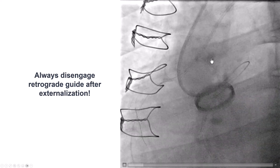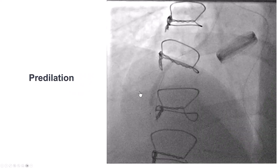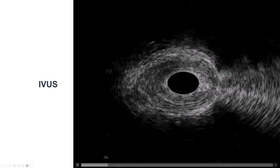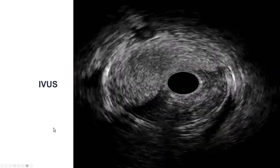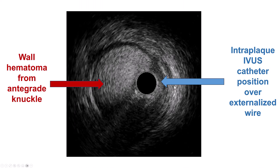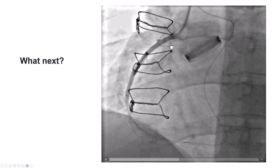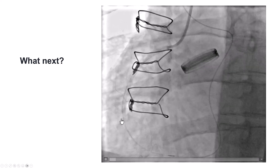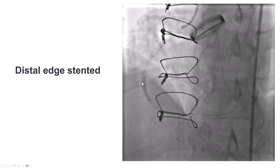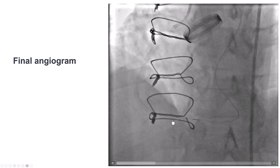After externalization, the first step is to disengage the donor guide so there is no potential injury on the donor vessel if there is movement or difficulty delivering. Then pre-dilation was performed and intravascular ultrasound was done. We see that we have been in the intraluminal space for the most part, with some areas of hematoma from antegrade wire manipulations — but essentially true-to-true crossing all the way from the proximal cap to the distal cap. Drug-eluting stents were placed. Unfortunately, flow was not very good; the vessel distally looked diffusely diseased with a possible dissection. An additional stent was placed at the distal edge, which provided good flow into the PDA and the right posterolateral.